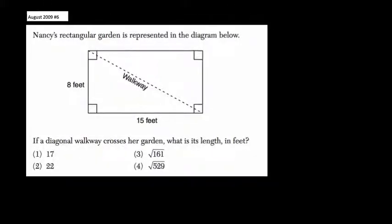We're trying to find the distance of the walkway right here, and we can use the Pythagorean theorem because we have these right angles and this is the hypotenuse.